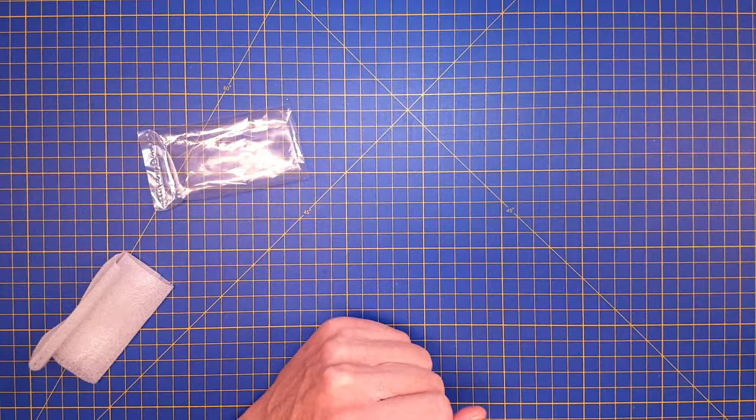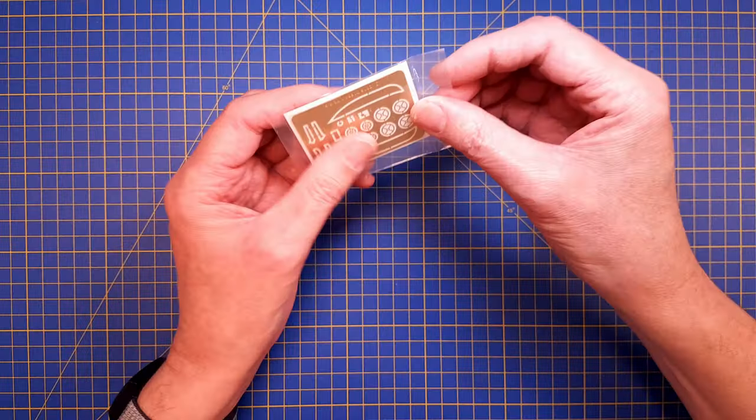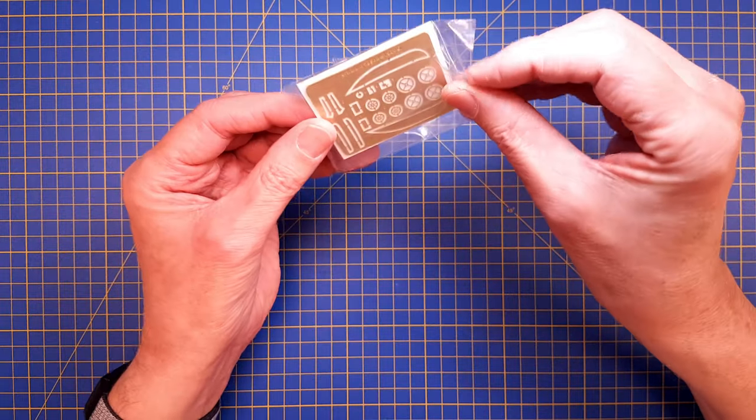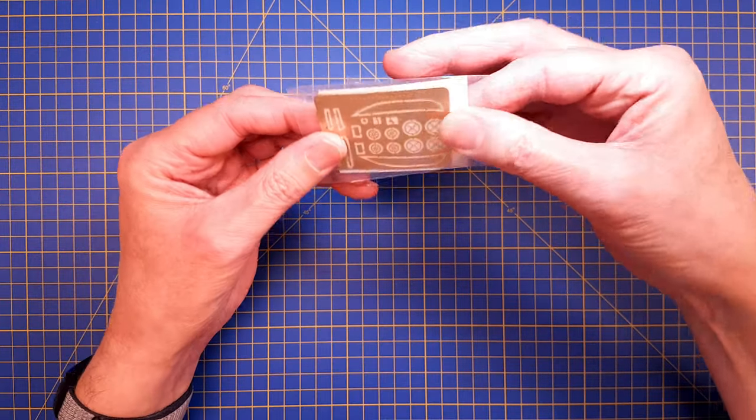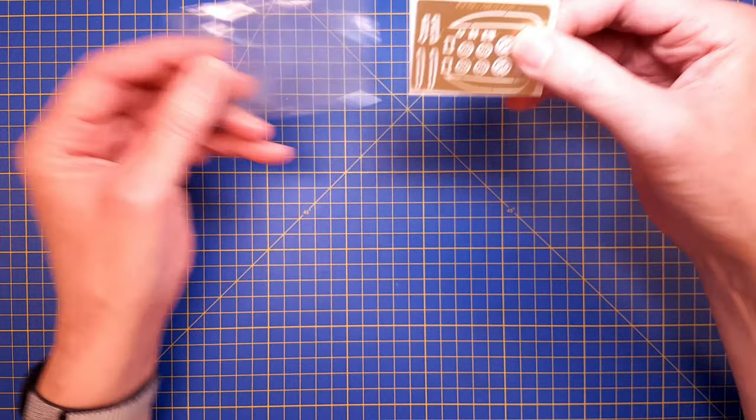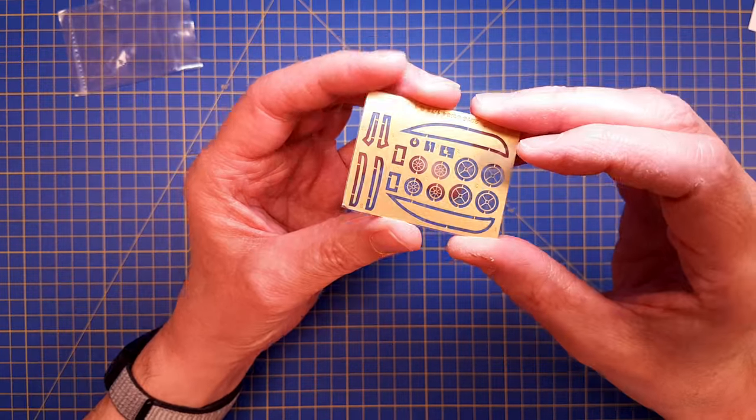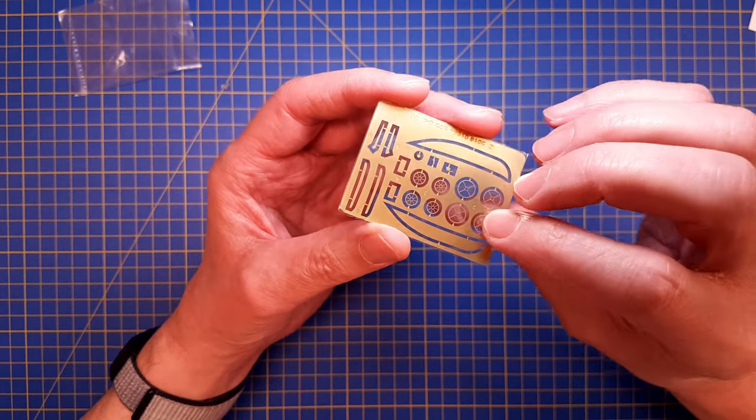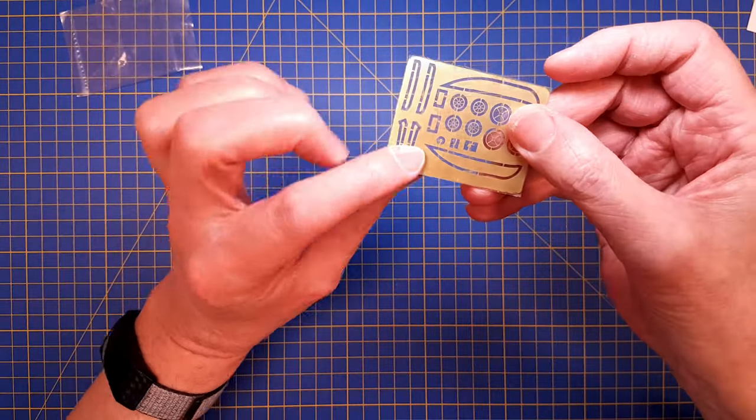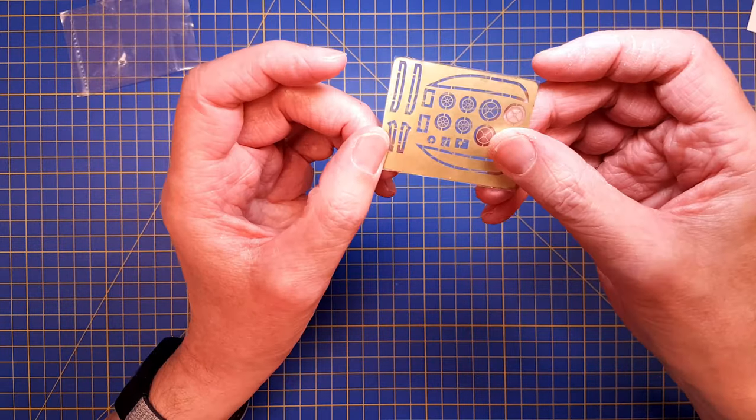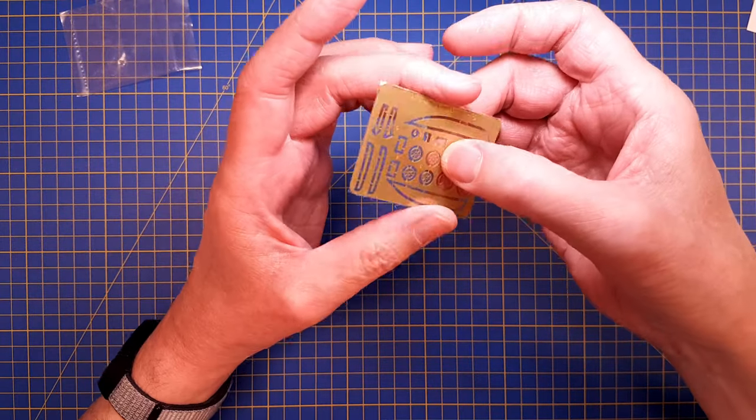The photo etch that comes supplied with the kit is packed in a separate bag with thick paper as protection, and the metal sheet is also covered with a protective plastic film.